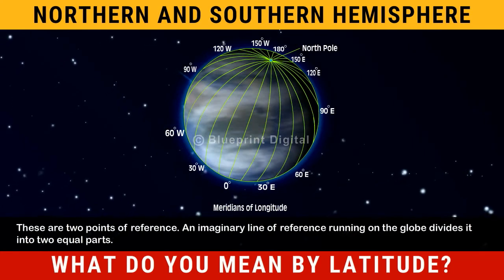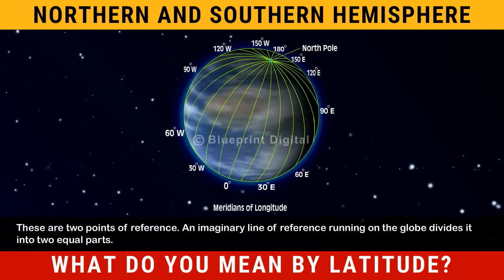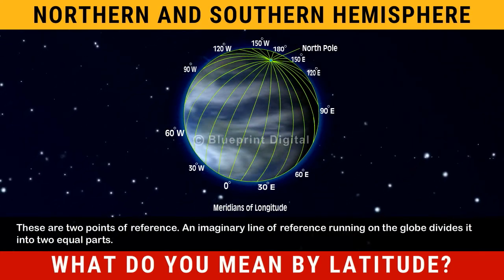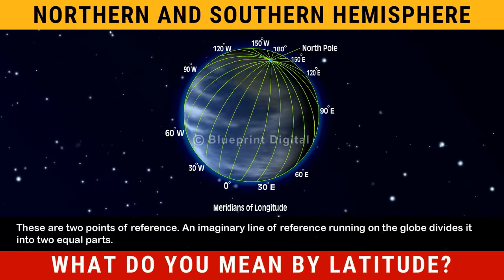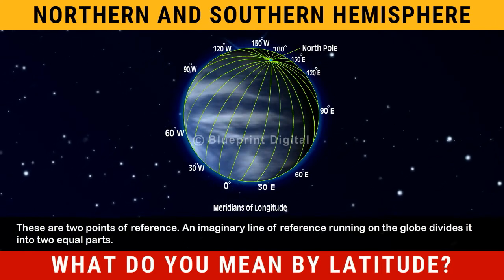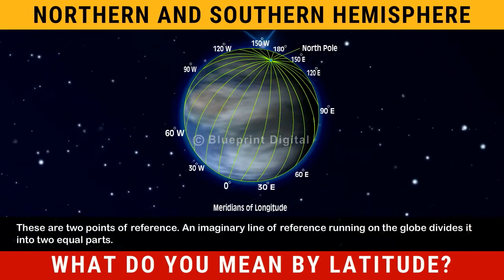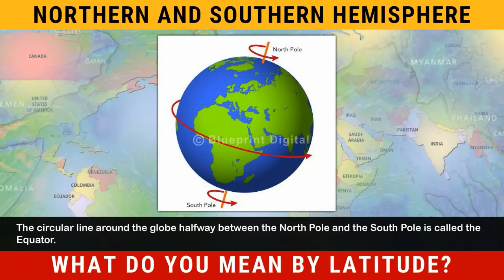An imaginary line of reference running on the globe divides it into two equal parts. The circular line around the globe halfway between the north pole and the south pole is called the equator.